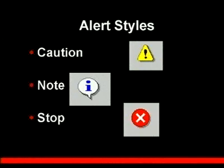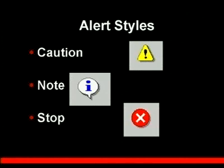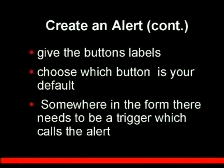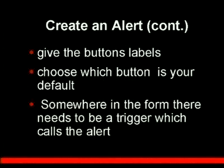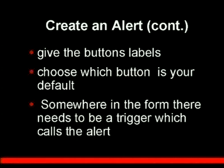An alert has three different icons to choose from, controlled by the alert style property. The caution icon looks like a traffic sign. Note is just an informative one. Stop is a stronger statement. You really don't have a choice of any other icon. After choosing the alert style, you give labels to the buttons — up to three buttons. The default button is the one that would be chosen if a user just hits Enter after seeing the alert.